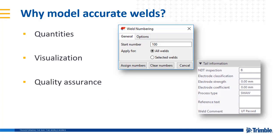And of course, with accurate model welds, this can be a boon to quality assurance processes. Weld tracking and traceability is increasingly a requirement on projects. With all welds accurately modeled, you can assign each weld a unique tracking number to aid in the quality processes. It also means that you can store or link test results into the model for a 3D visual as-built record of the project.